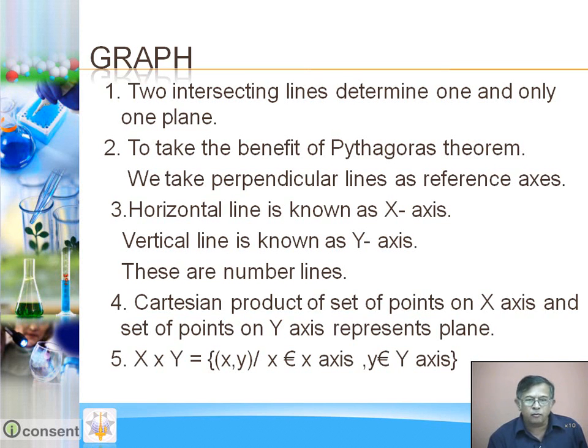Because X axis and Y axis are number lines, their Cartesian product is a set of ordered pairs. Every ordered pair represents a point on the plane. To fix a point on the plane, we'll consider ordered pairs.